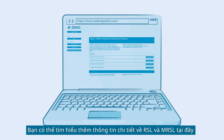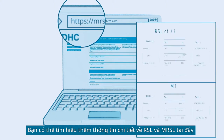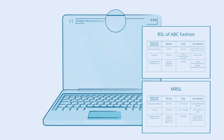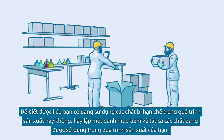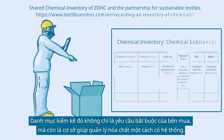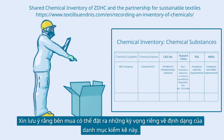You can find more detailed information on RSL and MRSL here. To understand whether you are using any restricted substances in your production, prepare an inventory of all substances in your production process. Such an inventory is not only required by your buyers but also forms the basis for managing chemicals in a systematic way. Be aware that your buyers may have specific expectations regarding the format of such an inventory.